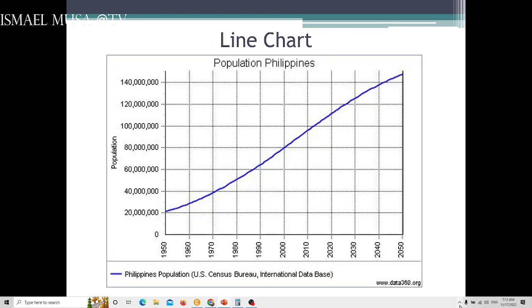This is the line chart. You have the x and y-axis. And if you want to show the trend, changes along time. This is Philippines population based on U.S. Census Bureau International Database. We can really see how the population increases as time goes on. 1950, 1960, 1970, and even as predicted up to 2050.